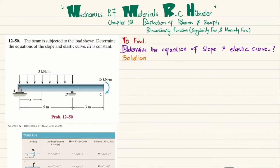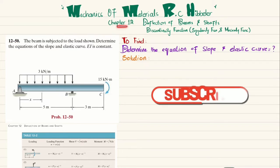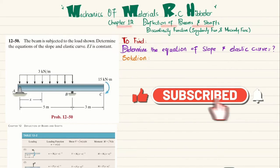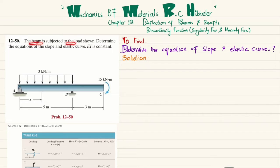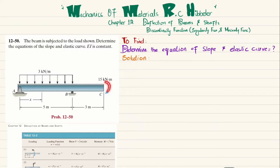Welcome back. In this video we are going to solve problem 12-50, taken from chapter 12 'Deflection of Beam and Shaft' from the book Mechanics of Materials by R.C. Hibbeler. The beam is subjected to a load shown; we need to determine the equation of slope and equation of the elastic curve, where EI is constant. We will solve this using Macaulay's method.